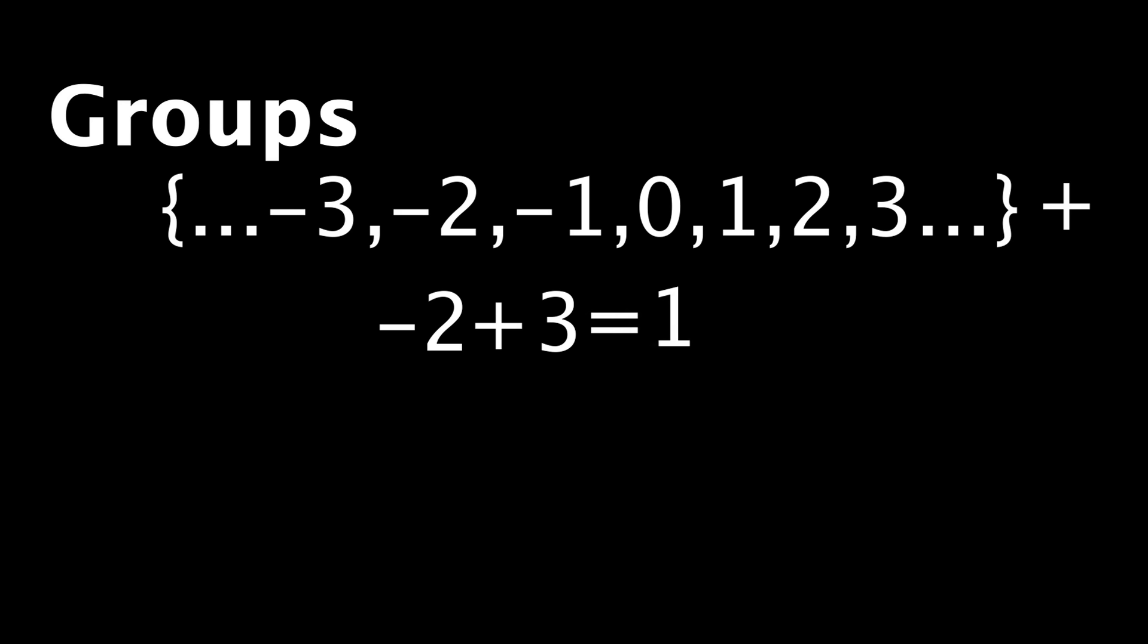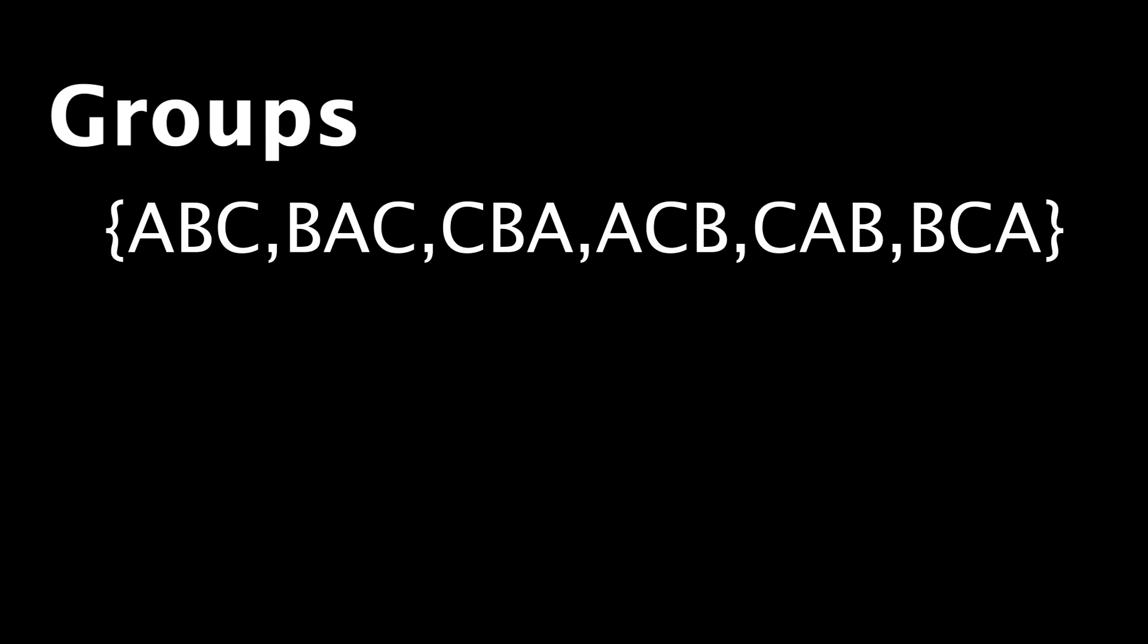So the set of integers is a group under addition, because you can take any two integers, combine them with addition, and get a third. There are other reasons this is a group, but not important for this video. Because what is important to note is that groups don't care about what the operation is. Sure, it could be addition or multiplication, but the set of all permutations of, let's say, three objects, forms a group using the operation of composition, basically applying one shuffle to another.